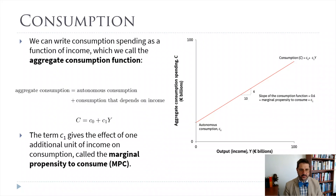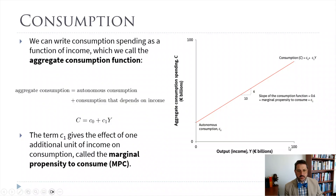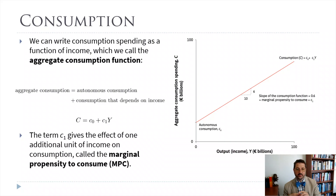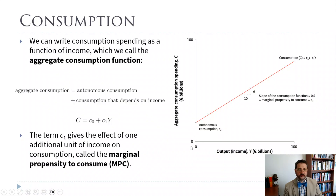So how are we going to graph this? All of our models in this book are mostly in graphs with a little bit of math. On the horizontal axis, we're going to put output — whenever we say output, GDP, or Y, that's all the same thing. On the vertical axis, we're going to have first just consumer spending; we will add in investment spending in a little bit.